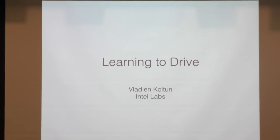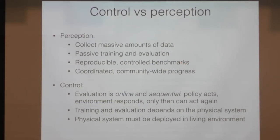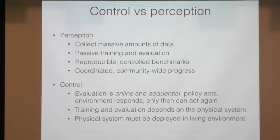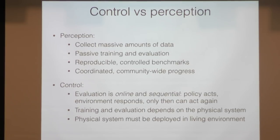Thank you very much. The room is utterly packed — I didn't expect that. I work in both perception and control, and people ask me sometimes why is our understanding of control behind our understanding of perception? Why is our progress in perception seemingly more impressive and more rapid than our progress in control? I think the difference is actually quite deep and quite structural — it's not a coincidence, not some sociological arbitrary factor. It is due to structural differences between perception and control.